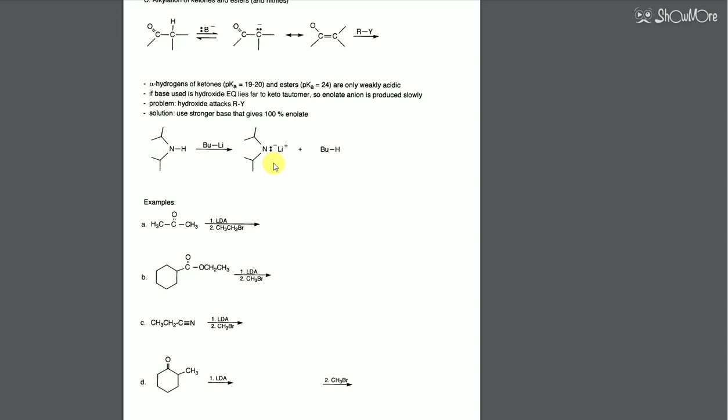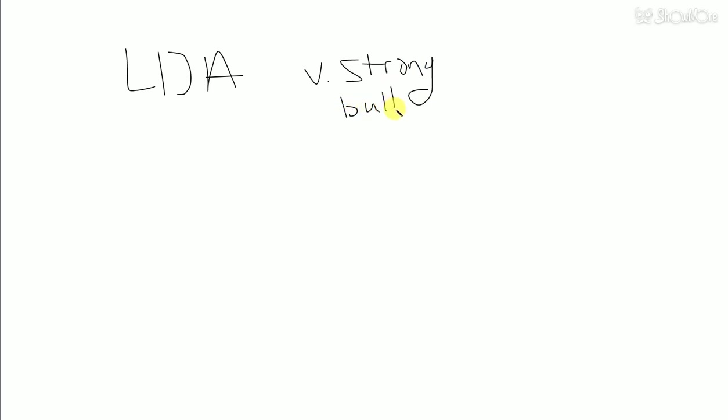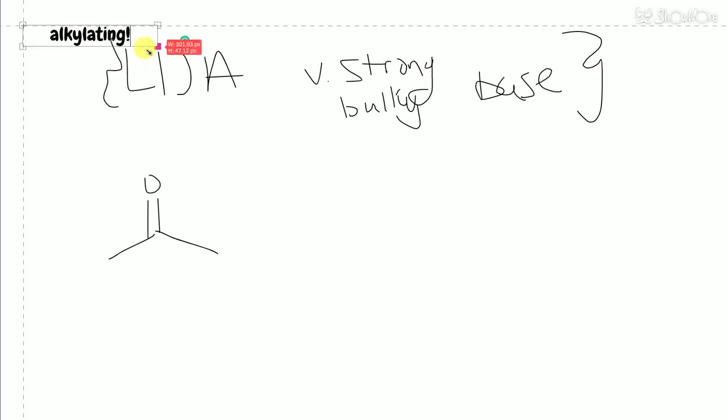And so the reason why this is very important is that a very strong and very bulky base will do two things, right? The very strong base will ensure that we are, let's say, give an example. I just told you LDA is a very strong and bulky base, right? That's what I just said. And so this is very important. And so the reason why this is important is we're going to demonstrate here. So let's say I have a reaction. And I'm going to just tell you what the purpose of LDA is, what we use it for, is for alkylating. We don't use it for other stuff. So we use LDA for alkylation.